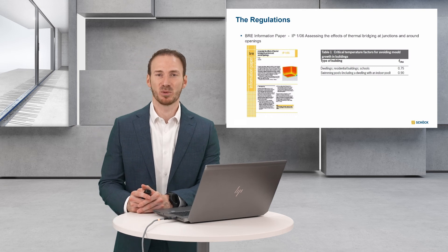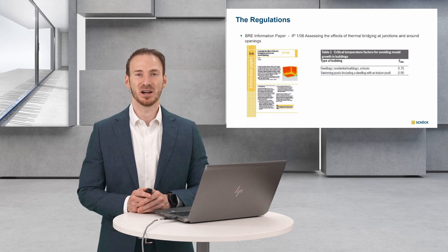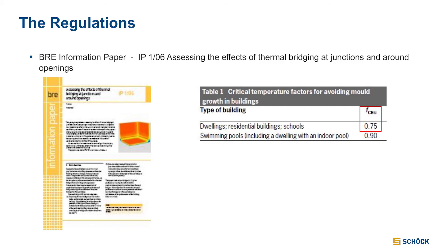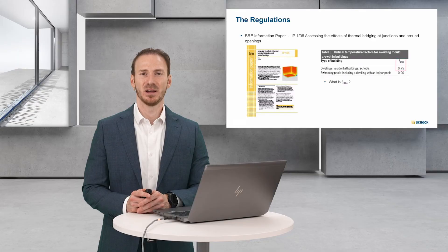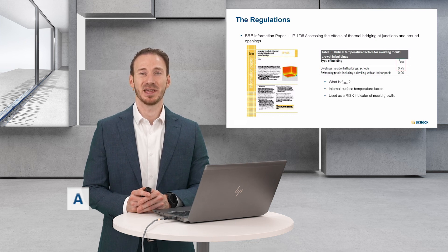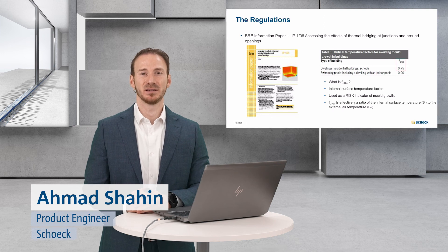Within Information Paper 1/6, that sets out something called fCRsi, or the temperature factor. It's set out as a minimum of 0.75 for residentials. Basically, it's a risk indicator of mould and condensation. It compares the internal surface temperature to the outside air temperature, and it's set as 0.75 as a minimum for residential structures.